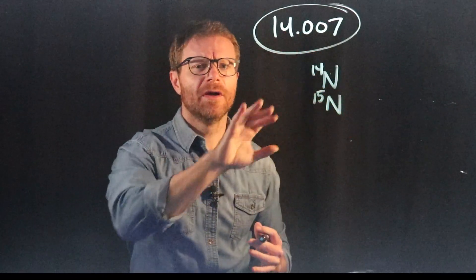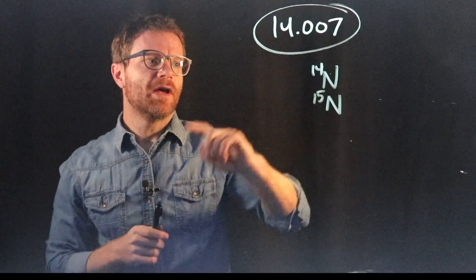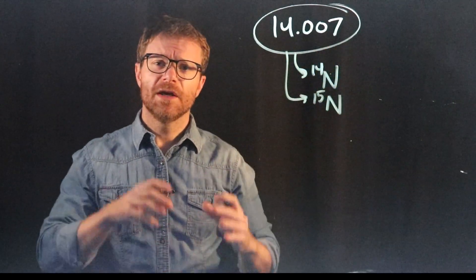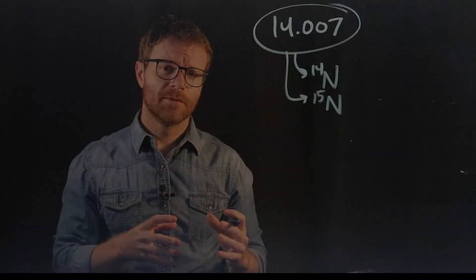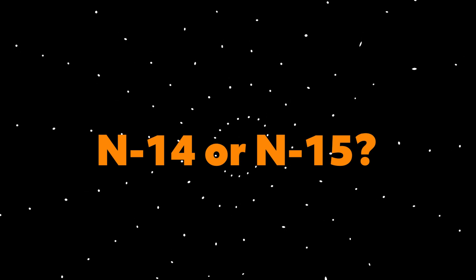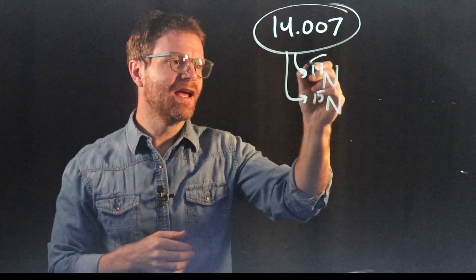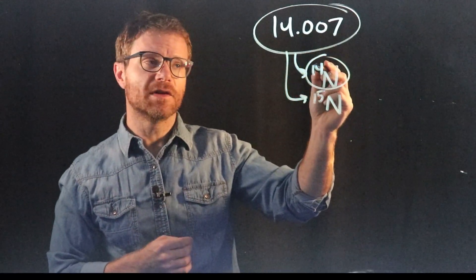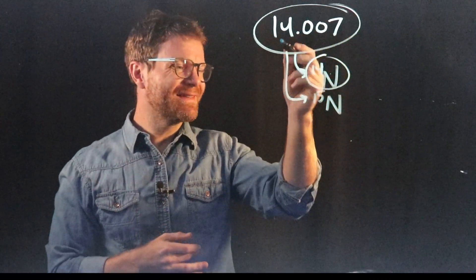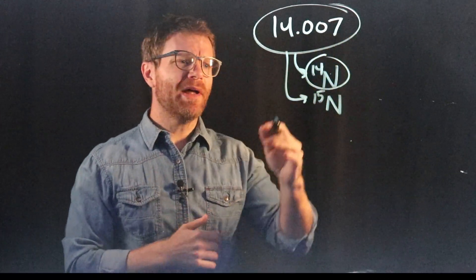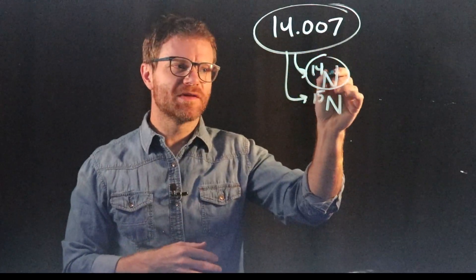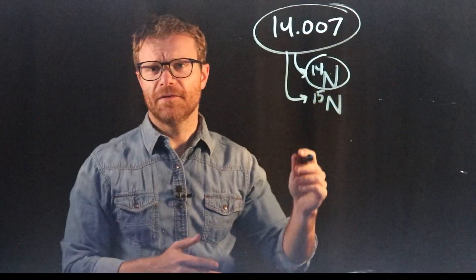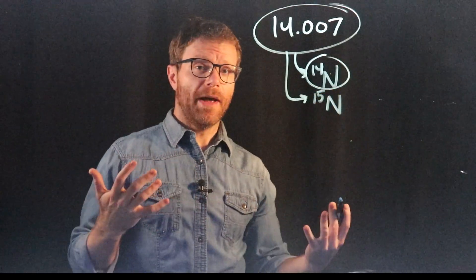Now before you do any math here, you should be able to look at this number and know that it's the average of these two. And you should be able to tell me which one of these two isotopes is much more common. Think about it right now. If you said N14, you're right. It's way more common because this number 14 is very close to 14. 14.007 is very close to 14, but it's not that close to 15. So I bet it's something like 99.9% N14 and 0.001 or something like that of N15.